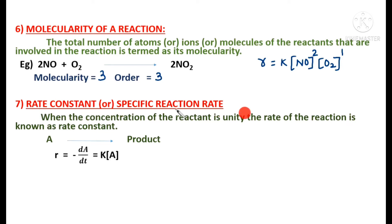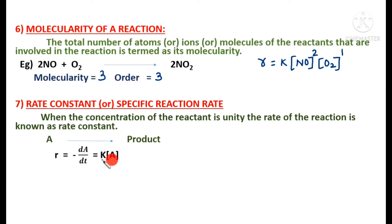Next is the rate constant or specific reaction rate. When the concentration of the reactant is taken as unity, the rate of the reaction is known as the rate constant. For example, if A → product, the rate equation is R = −d[A]/dt = k[A]. When concentration of A is unity, R = k. So rate constant k equals rate when concentration is 1.